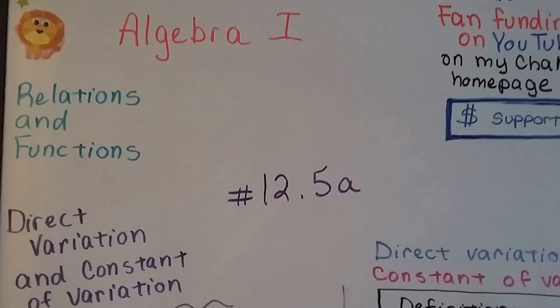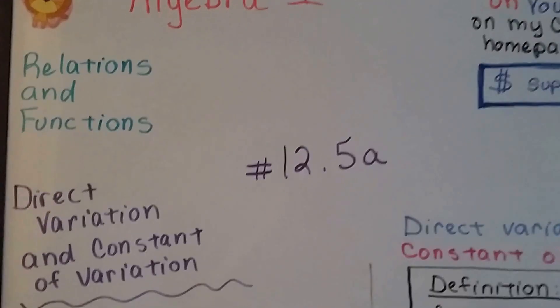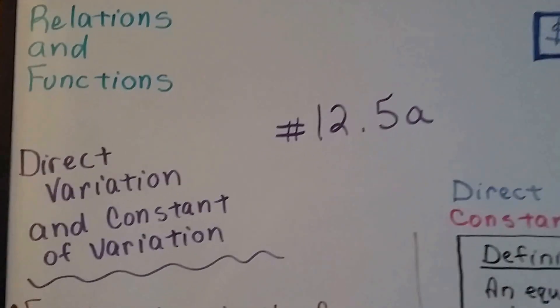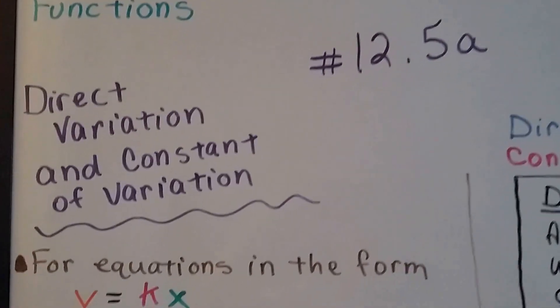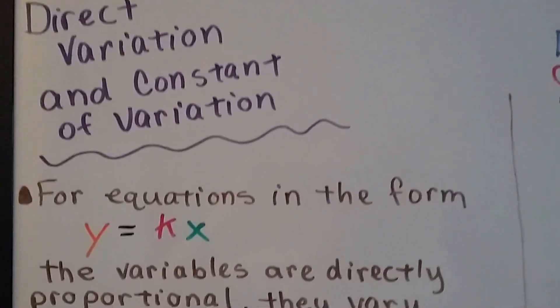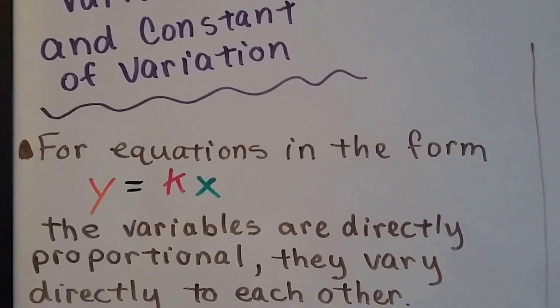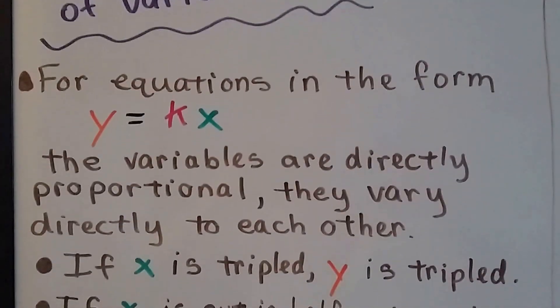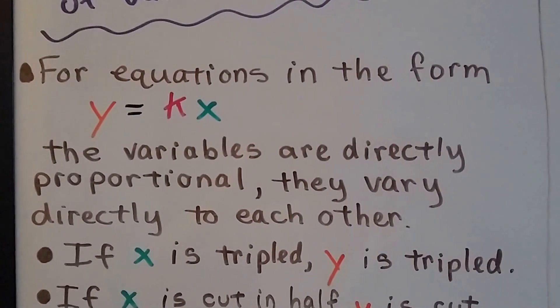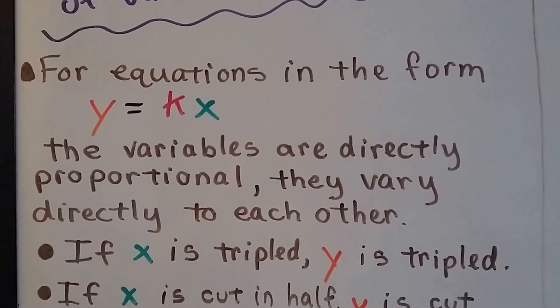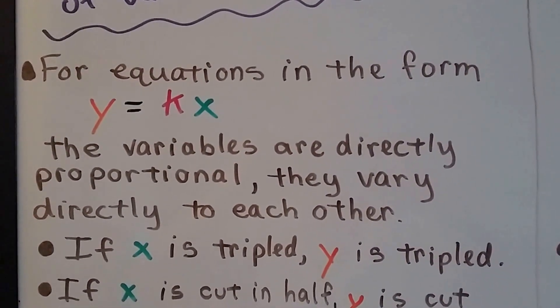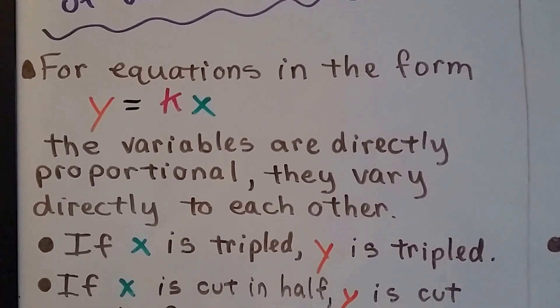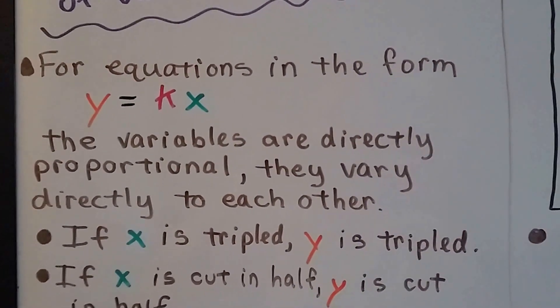Algebra 1, 12.5a: direct variation and constant of variation. We have equations in the form of y equals kx. Those variables are directly proportional — they vary directly to each other.